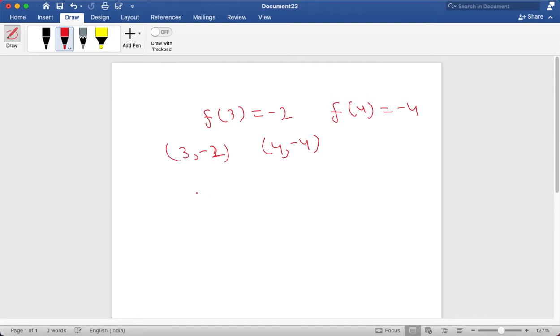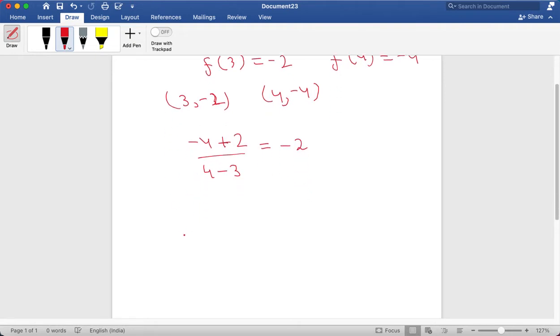So now y2 minus y1 divided by x2 minus x1 will give us minus 4 plus 2 divided by 4 minus 3 which is equal to minus 2. Now using this we can substitute in y equals mx plus c. So it will be equal to minus 2 is equal to minus 2 into 3 plus c. So c will be equal to 4 and using this we can find out the value.